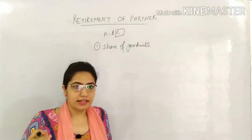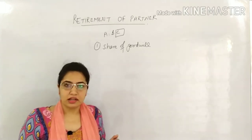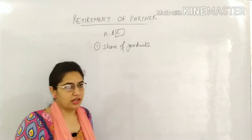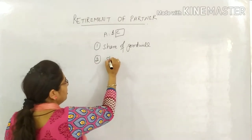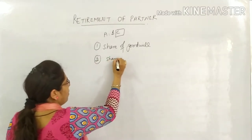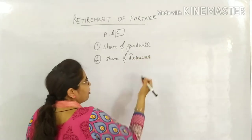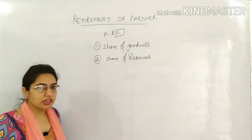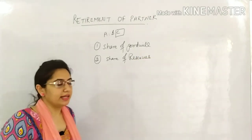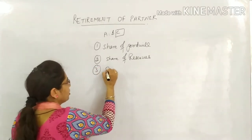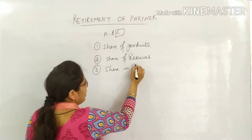Because after leaving, he can no longer take a share of the firm's future profit from goodwill. Second, he will get the share of accumulated profits and reserves. And third, he wants a share in revaluation.